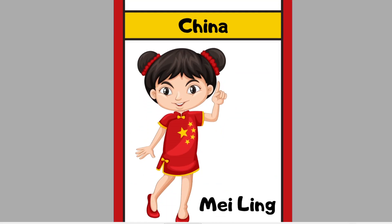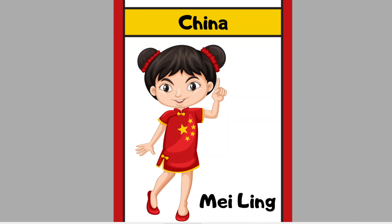Let's go to the first one. We have learned about countries and the people. The first one is China — C-H-I-N-A. China means negara China. The example of a name of a person from China is Meiling.